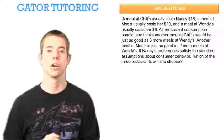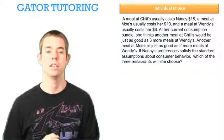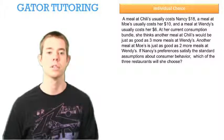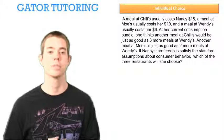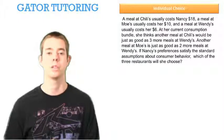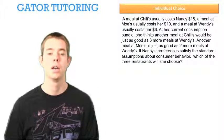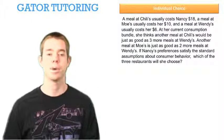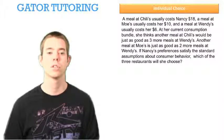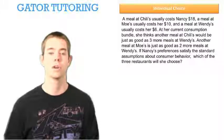A meal at Chili's usually costs Nancy $18, a meal at Moe's usually costs her $10, and a meal at Wendy's usually costs her $6. At her current consumption bundle, she thinks another meal at Chili's would be just as good as three more meals at Wendy's, and another meal at Moe's is just as good as two more meals at Wendy's. If Nancy's preferences satisfy the standard assumptions about consumer behavior, which of the three restaurants will she choose?